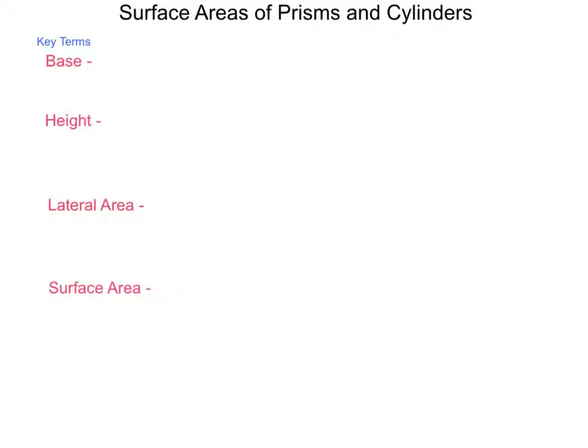As we continue to look at three-dimensional figures, in this lesson we're going to talk about surface areas of prisms and cylinders. A prism is a polyhedron with two congruent parallel bases, and a cylinder is like a polyhedron but it has circular bases that are congruent and parallel.